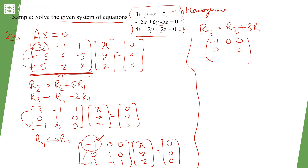After further row operations, the third row becomes [0, 0, -1] with entries 0, 0, -1, and 1 in the relevant positions.